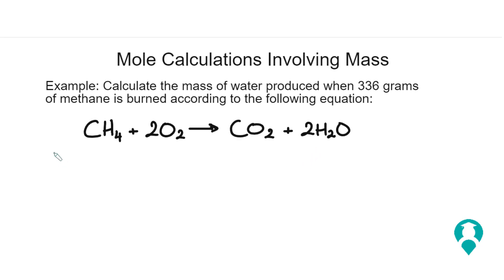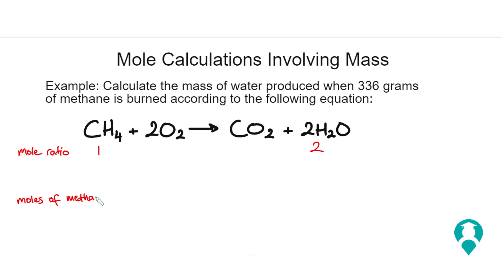What we're going to do first is write the mole ratio. We're interested in methane and water. There's one mole in front of methane and two in front of water, so it's a 1 to 2 mole ratio. Now let's work out the number of moles of methane. Moles of methane equals mass divided by GFM (gram formula mass), which is 336 divided by 16, and that gives us 21 moles.